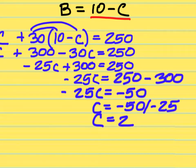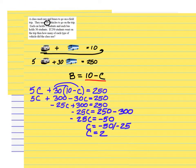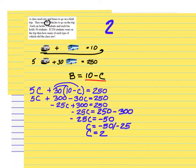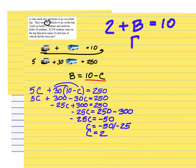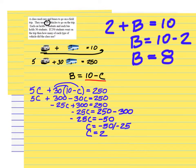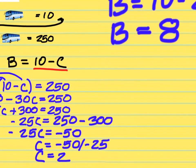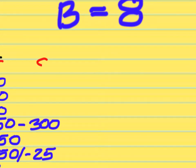So we have 2 cars going on the trip. Since C equals 2, we can come back to the top equation and plug it in. C plus B equals 10 — car equals 2, so 2 plus B equals 10, and 10 minus 2 gives B equals 8. We took 8 buses and 2 cars. The final answer is 8 buses and 2 cars.